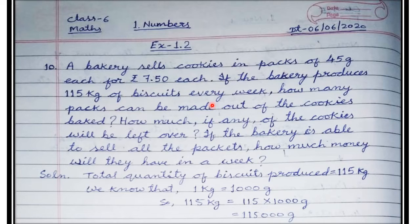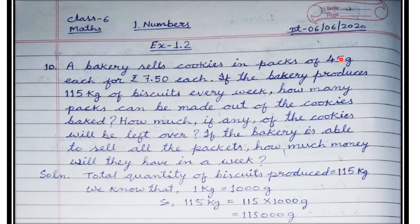So here the total quantity of biscuits produced in a week is given as 115 kg, while they are packed in packets and each packet weight is 45 grams - that means 45 grams of biscuit is packed in each packet. To find out the number of packets, we'll first have to convert the total quantity of biscuits into grams, because each packet contains 45 grams, so the units should be the same. 1 kg is 1000 grams, so 115 kg will be 115 into 1000 grams.